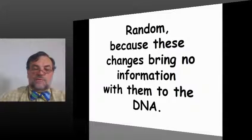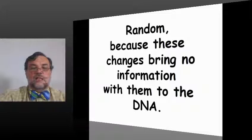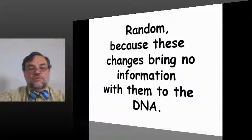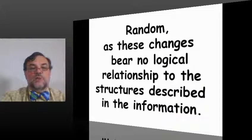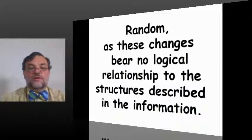We can see that the DNA has a lot of information in it about structures. In this 2%: structures of polypeptide chains, structures of proteins. Through that, there's a bunch of information there on how to build polypeptide chains, how to build proteins. The changes in nucleotides do not bring new information with them—they bring no information with them to the DNA. We would call these changes random as these changes bear no logical relationship to the structures described in the information.